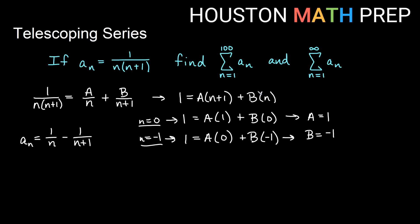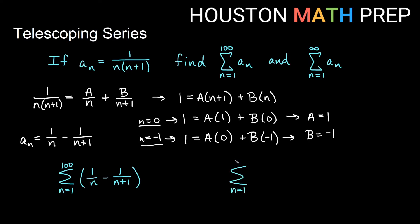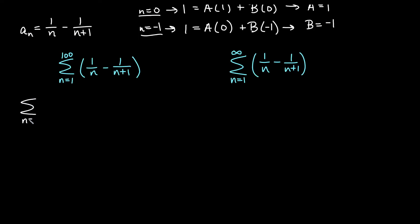Let's go ahead and write our sums in terms of our new decomposition. We'll do the sum from 1 to 100 of 1 over n minus 1 over n plus 1, and also consider the infinite sum — what happens if we go forever with the same expression 1 over n minus 1 over n plus 1. We'll first look at the sum of k terms so we can see the pattern of what reduces and what does not.